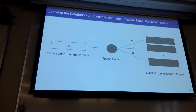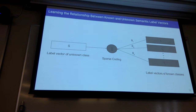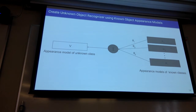We can call these attribute vectors or word vectors 'semantic vectors' to transfer knowledge from known to unknown object classes. Suppose we have semantic vectors for all known classes t1 to tk and a label vector for a known class s. We use sparse coding to learn how to transform all known class label vectors to s, learning parameters theta1 to theta3. Once we have those parameters, we learn a linear classifier — like a linear SVM — for each known class w1 to wk, then use the sparse coding parameters to transform those classifiers and build a classifier for the unknown class.